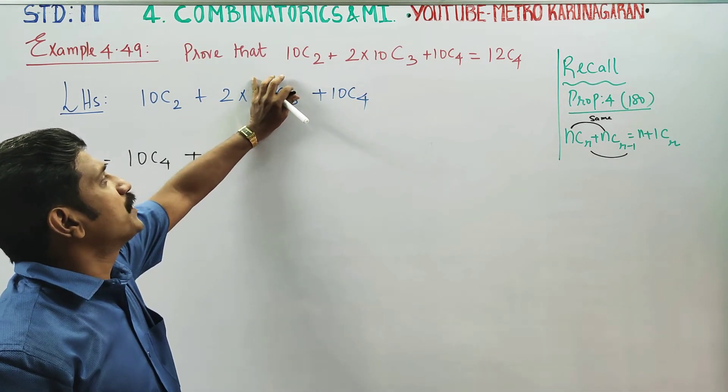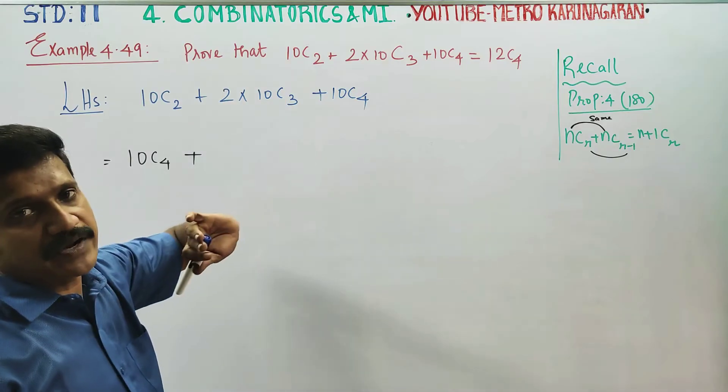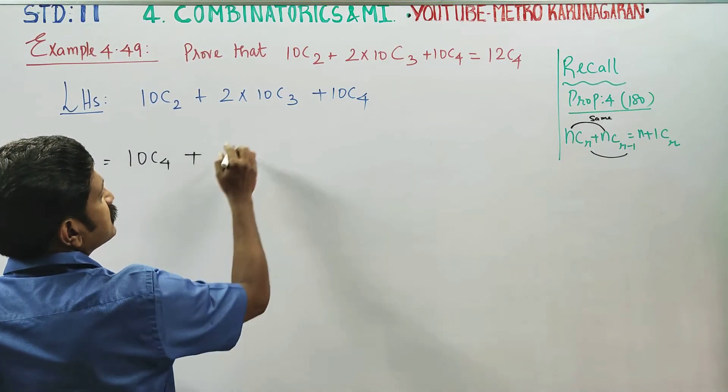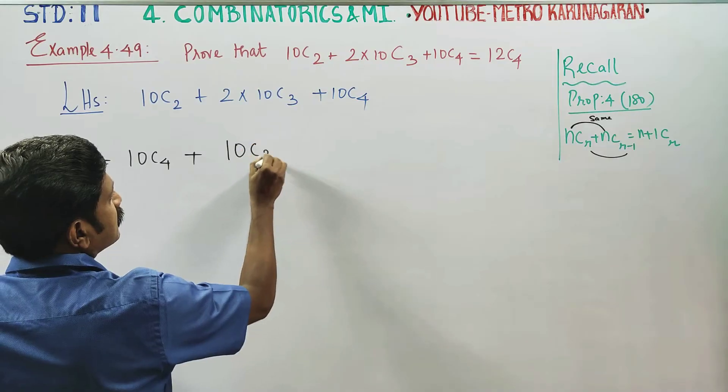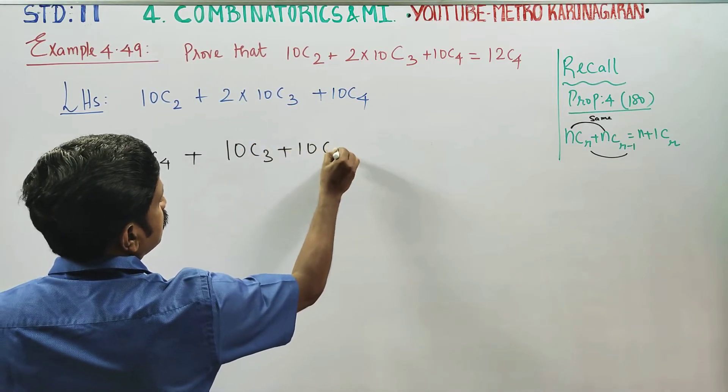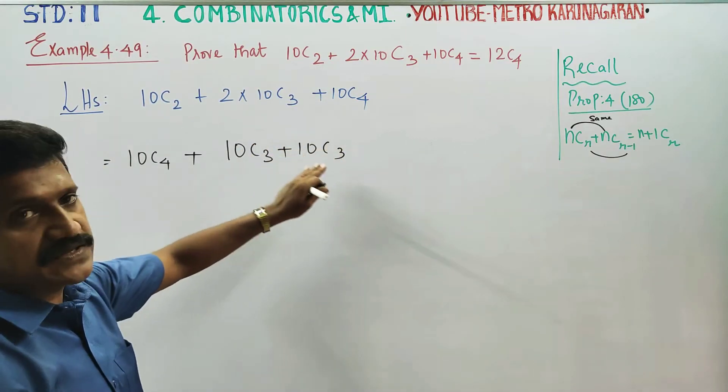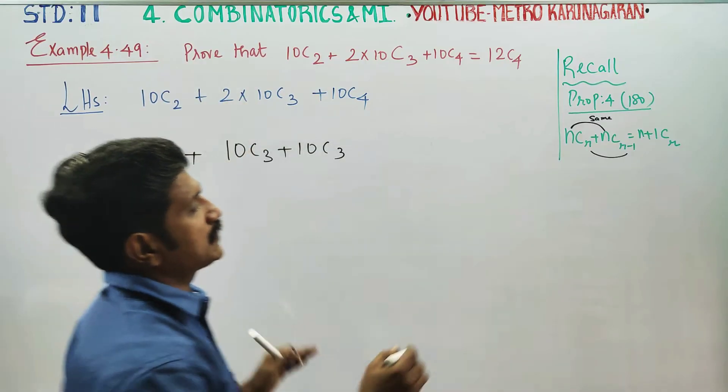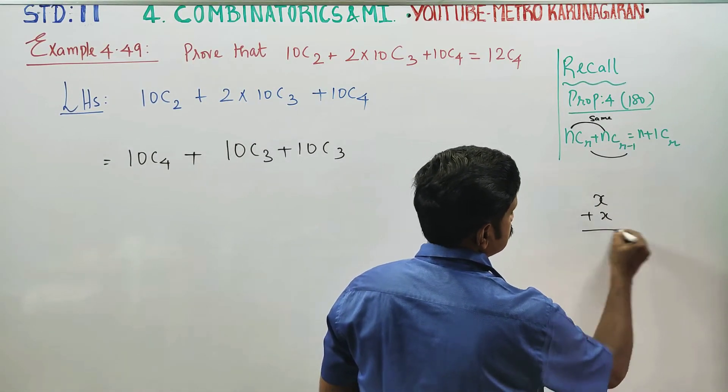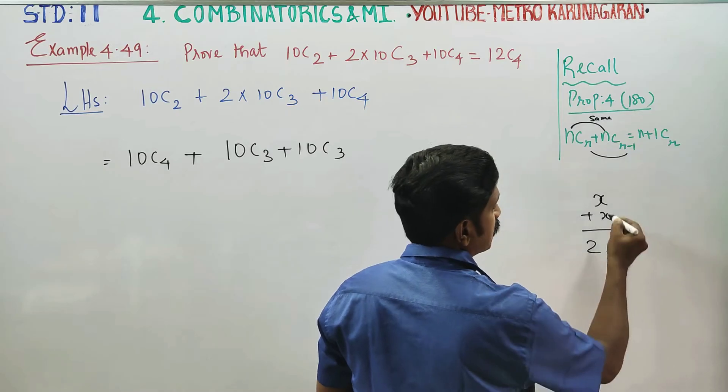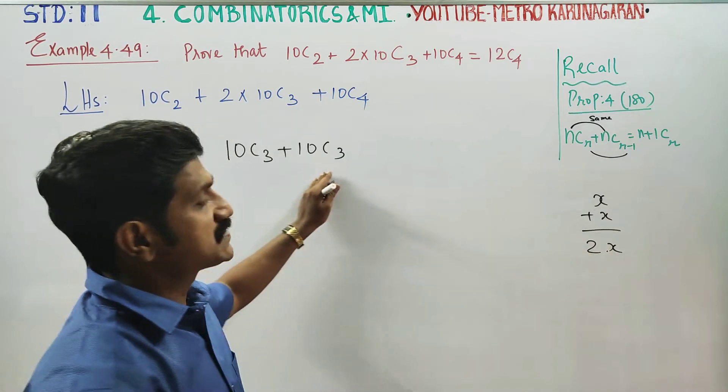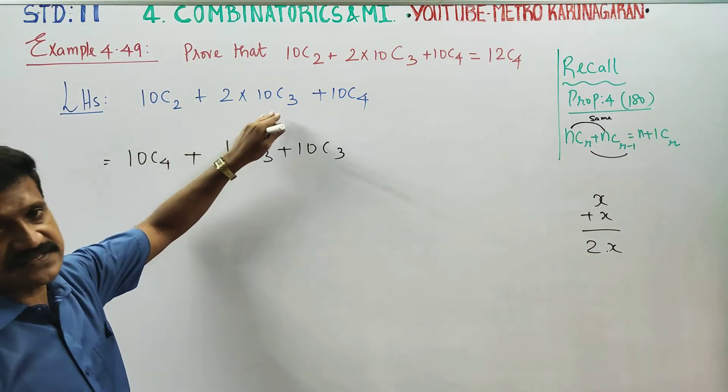This 2 into 10C3 means 10C3 plus 10C3 equals 2 times. If we add algebraically, X plus X equals 2X, so 10C3 plus 10C3 is 2 times 10C3.